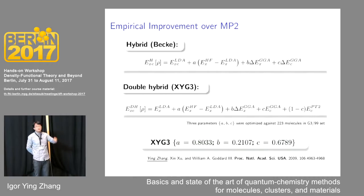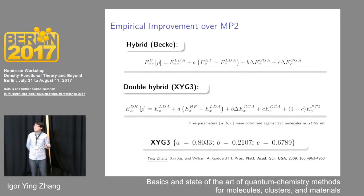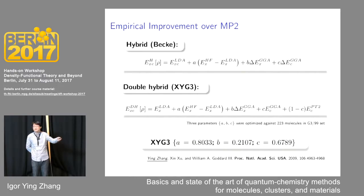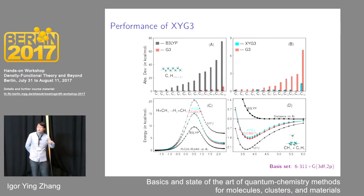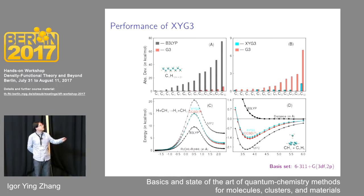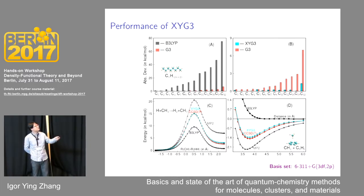Another way to improve MP2 is somewhat empirical: trying to improve accuracy without losing efficiency. A successful family of this kind of MP2-based improvement is the double-hybrid functional. Double-hybrid means introducing Hartree-Fock-like exchange and MP2-like correlation in the functional formulation. If we optimize the parameters with respect to a set of thermochemistry data, we get a double-hybrid functional such as XYG3, which can be extremely accurate for main-group elements — for reaction barriers and weak interactions, XYG3 results are in excellent agreement with CCSD(T) benchmark data.